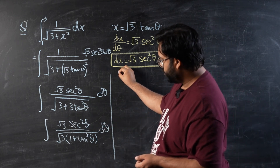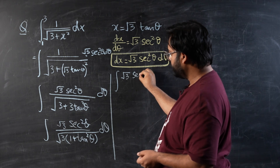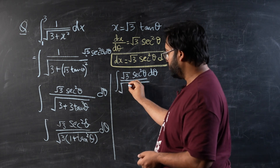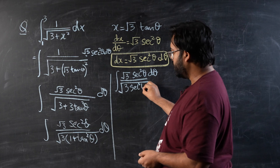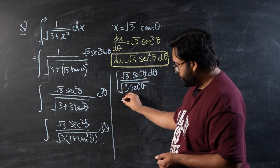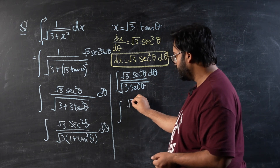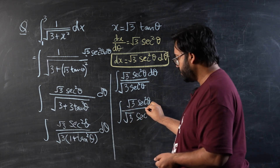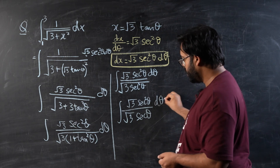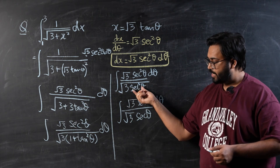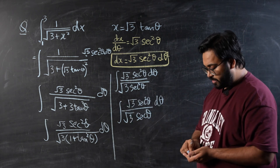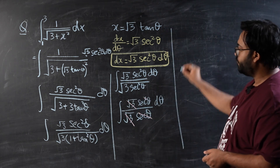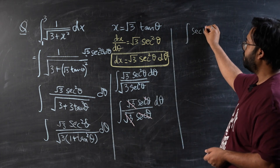This becomes the integral of √3 sec² θ dθ over √(3 sec² θ). Taking the square root of the denominator gives √3 sec θ. So we have √3 sec² θ over √3 sec θ. The √3 cancels and one factor of sec θ cancels, leaving us with the integral of sec θ dθ.